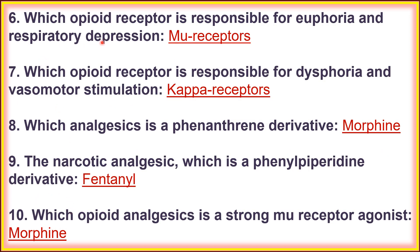Sixth, which opioid receptor is responsible for euphoria and respiratory depression? That is the mu receptor. Seventh, which opioid receptor is responsible for dysphoria and vasomotor stimulation? The kappa receptor is involved in dysphoria and vasomotor stimulation.